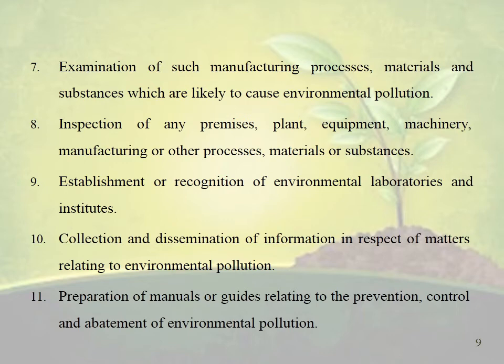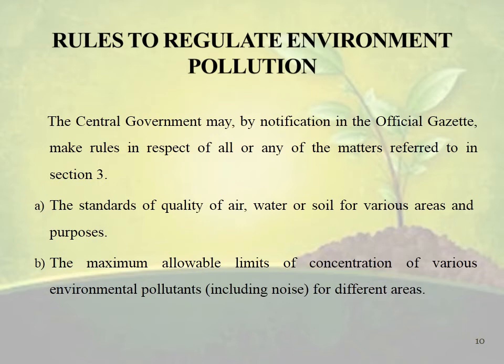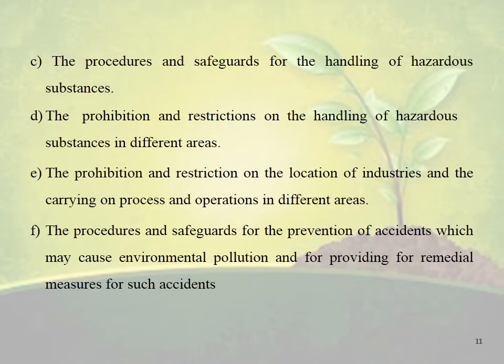Then we can move on to the rules to regulate environment pollution. The Central Government may, by notification in the official Gazette, make rules in respect of all or any of the matters referred to in Section 3. The standards of quality of air, water or soil for various areas and purposes; the maximum allowable limits of concentration of various environmental pollutants for different areas; the procedures and safeguards for the handling of hazardous substances; the prohibition and restrictions on the handling of hazardous substances in different areas; the prohibition and restrictions on the location of industries and the carrying on of processes and operations in different areas; and the procedures and safeguards for the prevention of accidents which may cause environmental pollution and for providing remedial measures for such accidents.